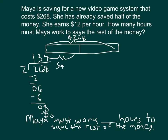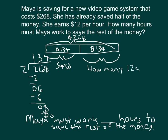So it's $134 — that's the amount that she has saved. She's saved $134, which is half of the amount, so she needs to save another $134. This is the amount that she needs to save. With this amount, remember she earns $12 per hour. So we're thinking: how many twelves do we need to get to $134? We divide $134 by 12.